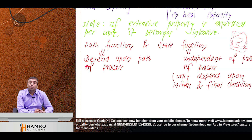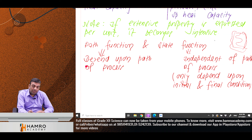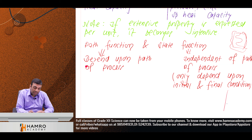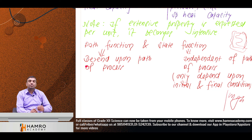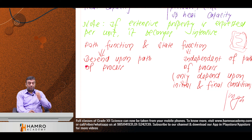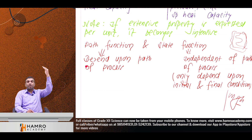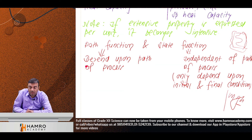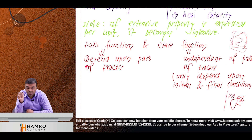For example, energy: E = mgh. Mass is constant, g is constant, and height depends on initial and final position. So, energy change is a state function.